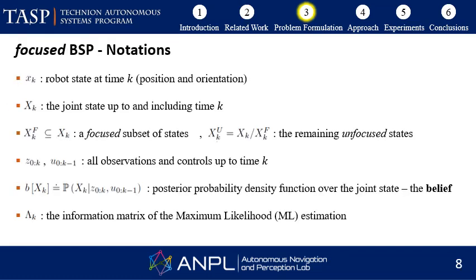Let's briefly go through some notations used throughout this presentation. Lowercase x denotes the robot state at time k. Capital X denotes the joint state up to and including time k. Capital X with superscript f denotes a subset of focused states, and the remaining unfocused states are denoted with superscript u. Lowercase z and u denote all observations and actions up to time k, and we assume standard Gaussian noise models. The posterior PDF over the joint state represents the belief at time k, denoted by b. Lambda represents the information matrix of the maximum likelihood estimation.